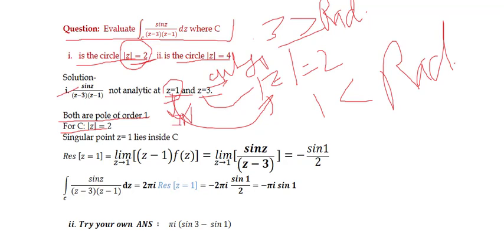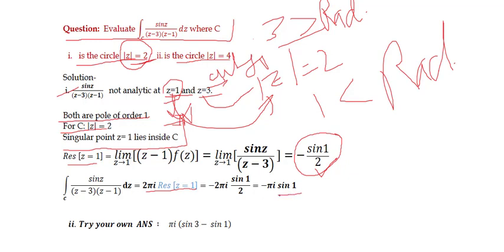Only z = 1 lies inside C for part (1). Residue at z = 1: limit as z→1 of (z−1) · sin(z)/((z−3)(z−1)) = limit as z→1 of sin(z)/(z−3) = sin(1)/(1−3) = −sin(1)/2. Therefore, the integral = 2πi · (−sin(1)/2) = −πi·sin(1).